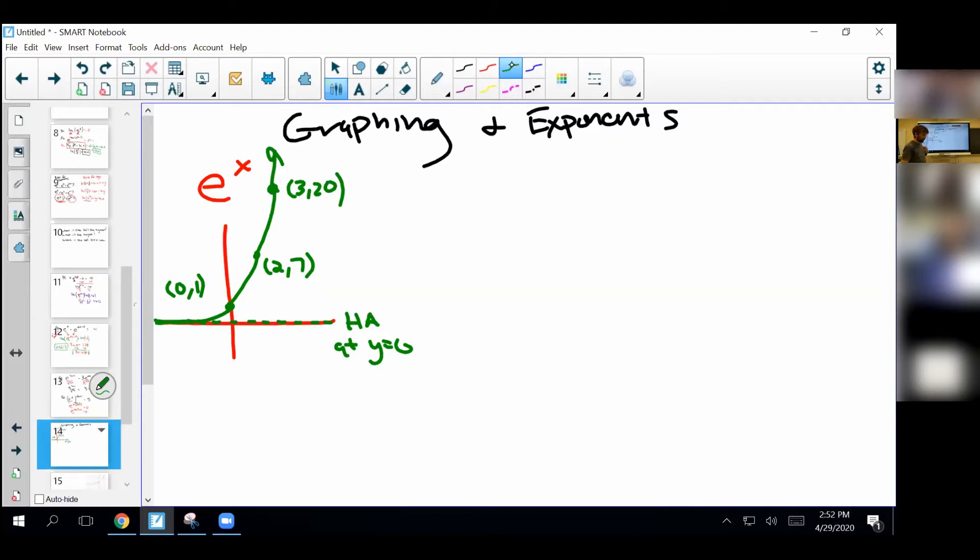I mentioned this when we were talking about transformations, but really there's only one exponential graph. Every exponential graph in the whole world is just a transformation of this one. That's one of these things that really gives transformations power. So I think it's worth thinking about transformations of e to the x.